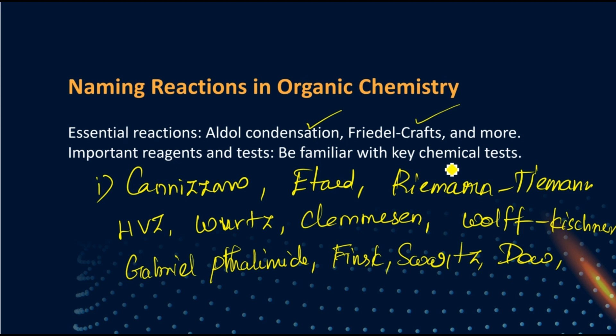Then important reagent and test. In case of the distinguishing test, those are super important - Hinsberg test, Lucas test, Baeyer's and Tollens, iodoform reaction, and then nitrous acid, then chromic acid reaction. These are super important and you can't skip the electrophilic aromatic substitution path - nitration, sulfonation, how it happens.